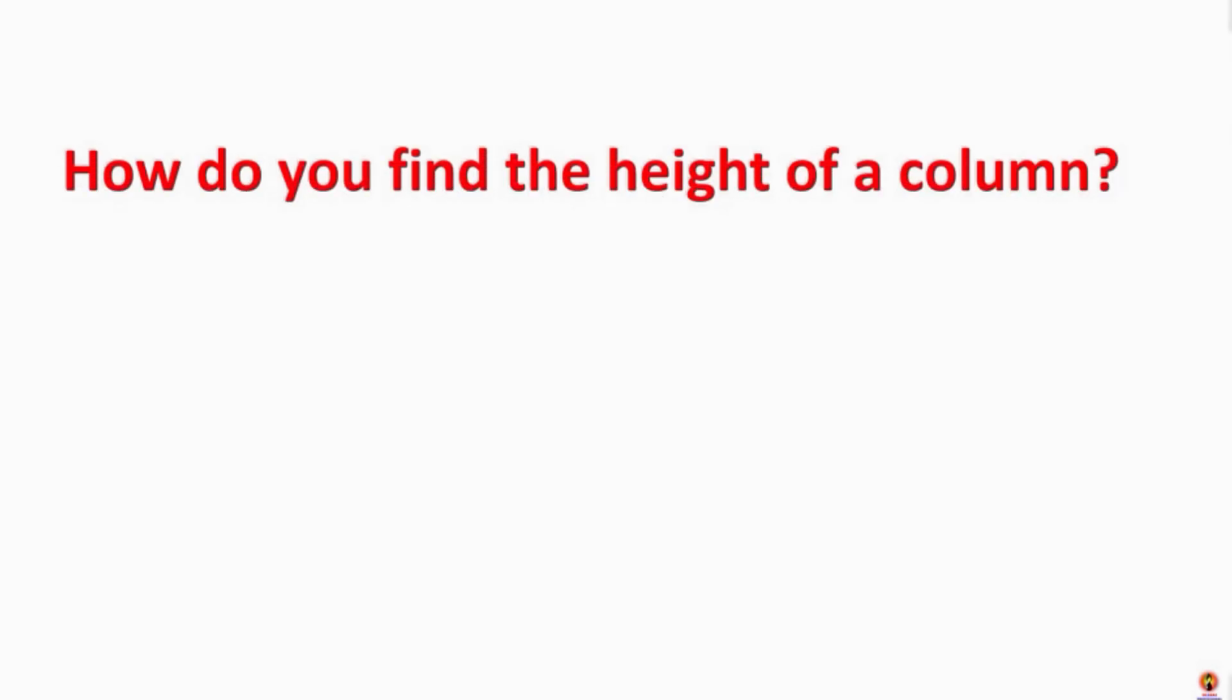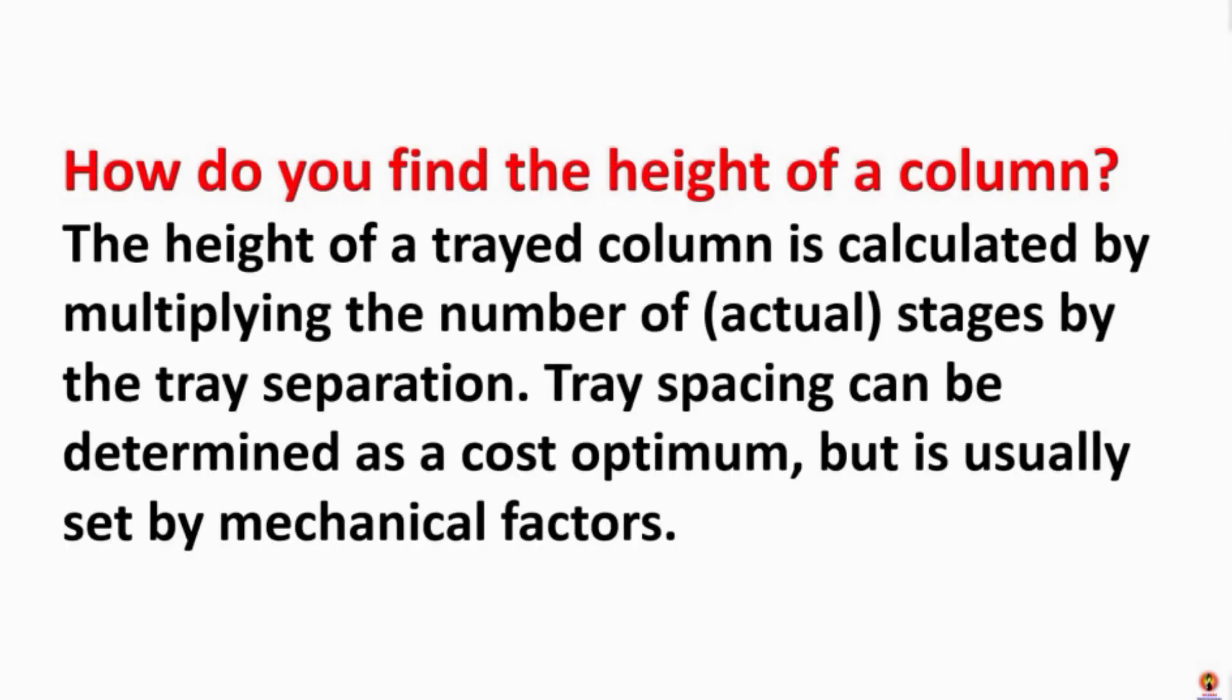How do you find the height of a column? The height of a tray column is calculated by multiplying the number of stages by the tray separation. Tray spacing can be determined as a cost optimization, but is usually set by mechanical factors.